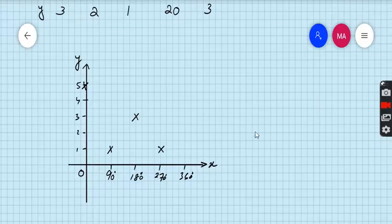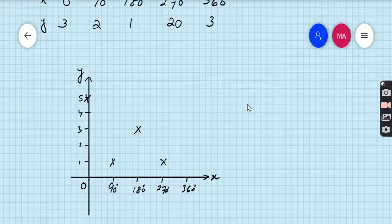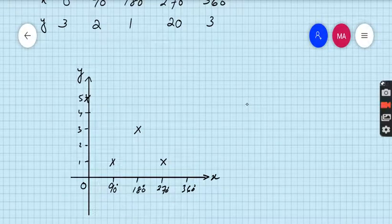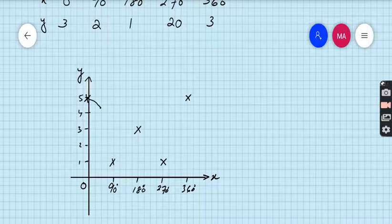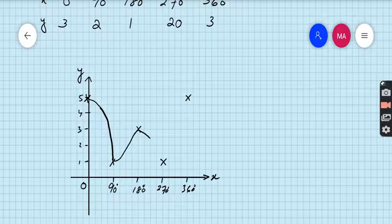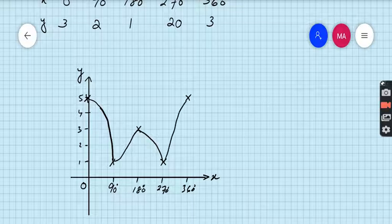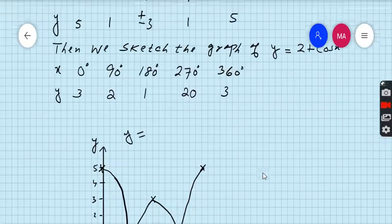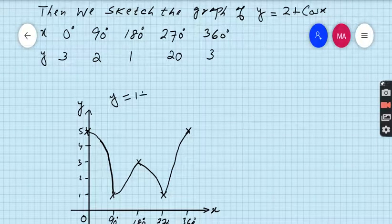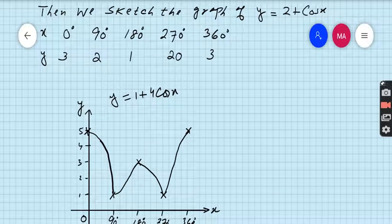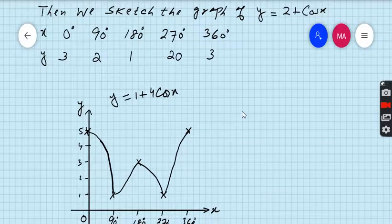And finally at 360 degrees you will have 5. Join all these points to get the smooth curve of absolute value function. So this is the graph of y equals - what is the equation? 1 plus 4 cos x, 1 plus 4 cos x.